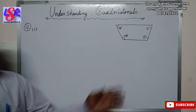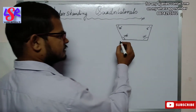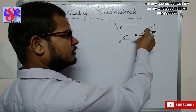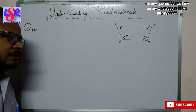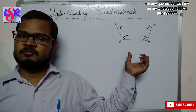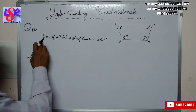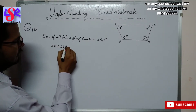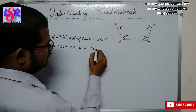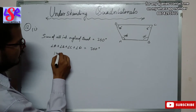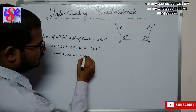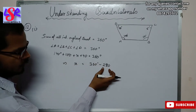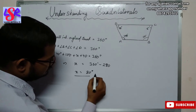In question number 12 first part, we have a quadrilateral named A, B, C, D with three angles given and we have to find the fourth. Since the sum of all angles of a quadrilateral is 360 degrees, angle A plus angle B plus angle C plus angle D equals 360 degrees: 140 plus 100 plus x plus 40 equals 360, so x equals 360 minus 280, giving x equals 80 degrees.